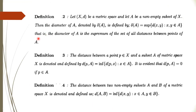Now some more definitions. First, what do you mean by the diameter of a set A? Let (X, D) be a metric space and A any non-empty subset of X. The diameter of A, denoted δ(A), is defined as the supremum of all the distances between the points of A. So you first find all distances between points of A, and the supremum of those distances represents the diameter of A.